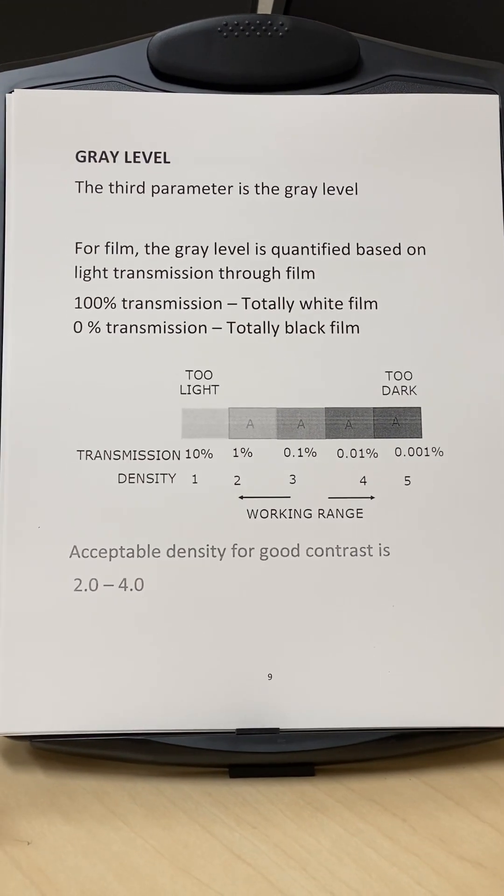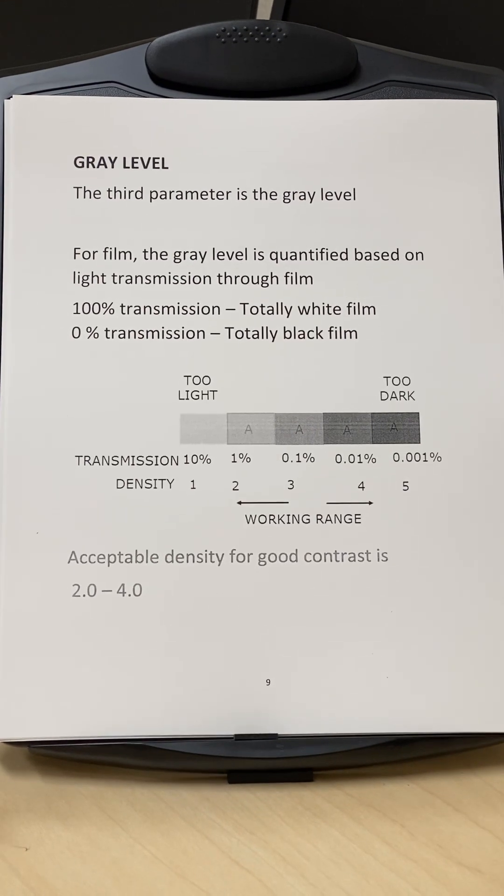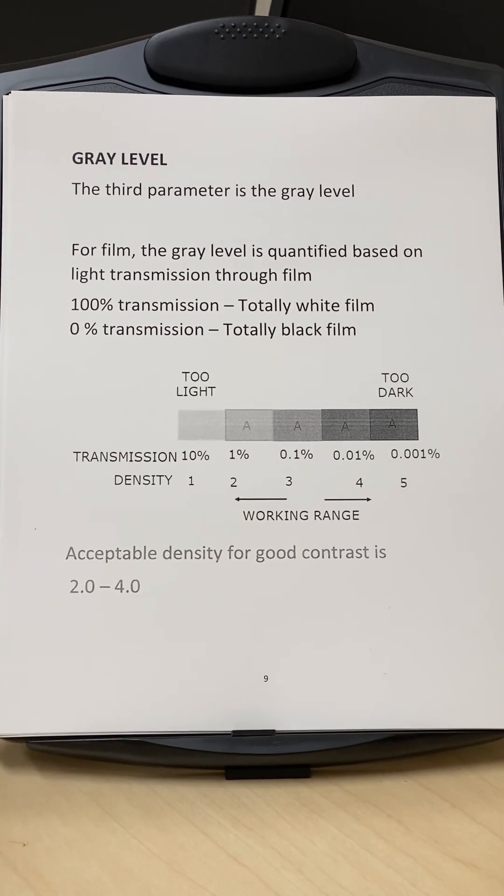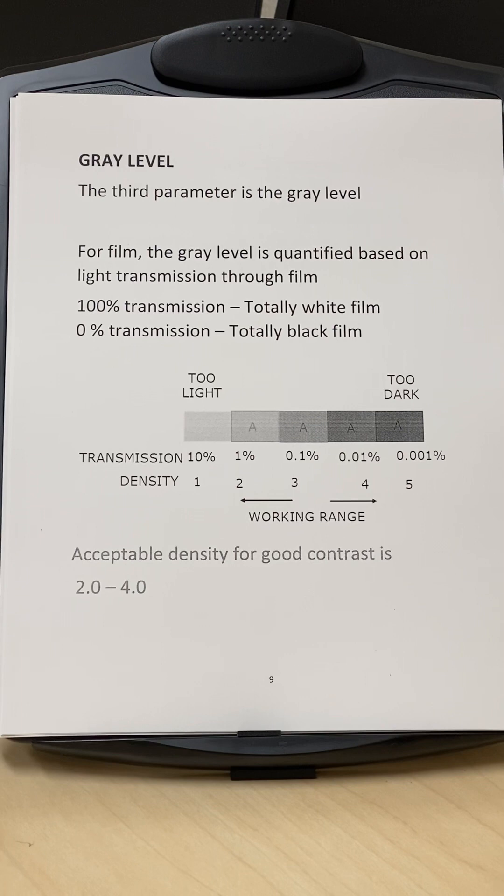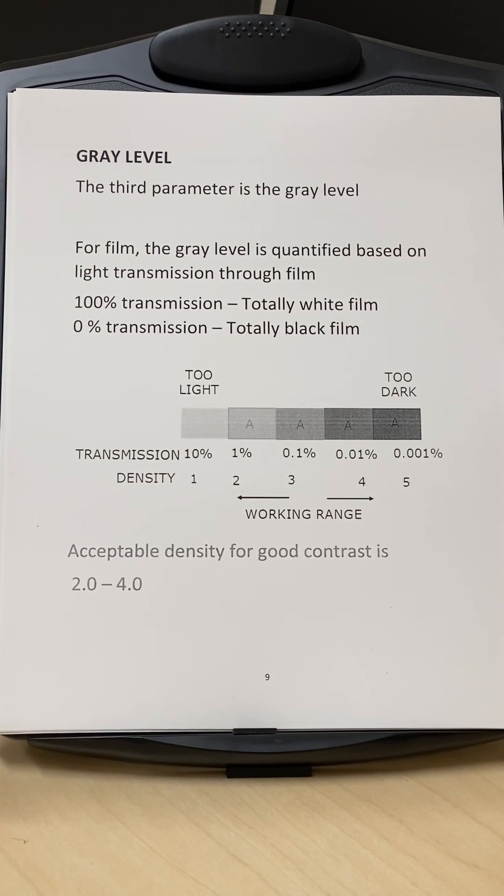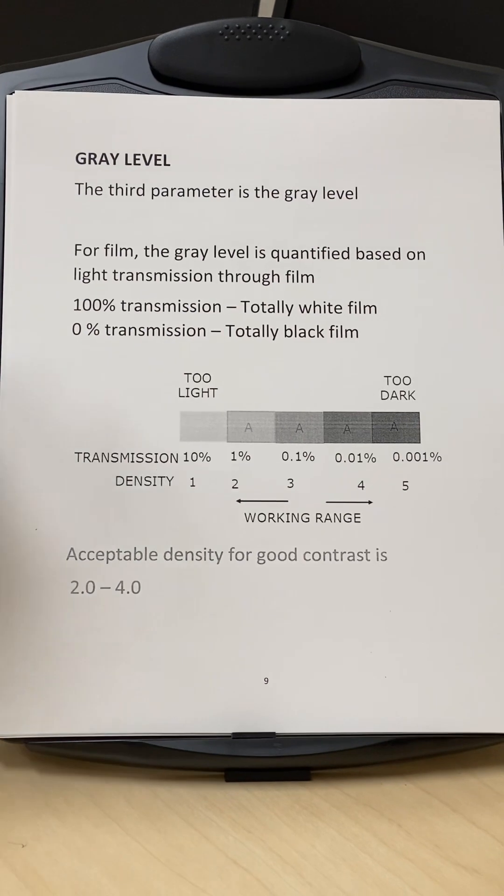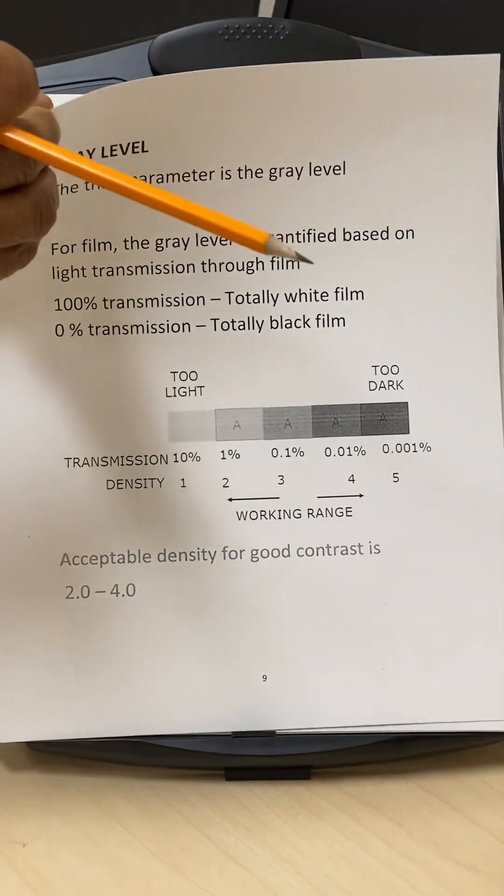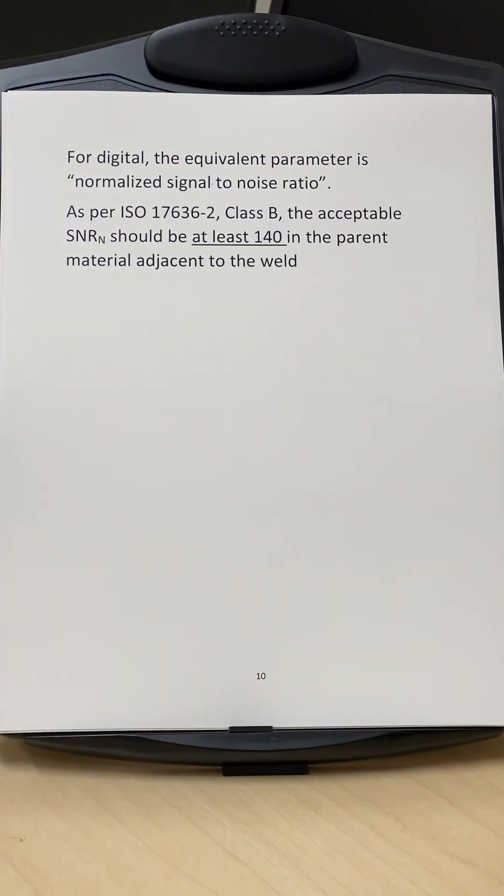Well, for digital, there is no such thing as gray level because you can always, you have the control over the gray level and you can always change it in the software. So for digital, what we have is what's called the signal to noise ratio of the image.